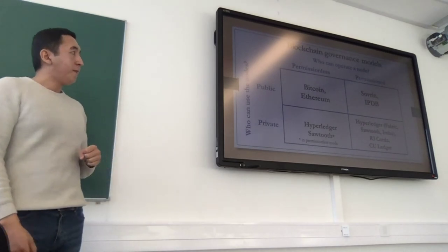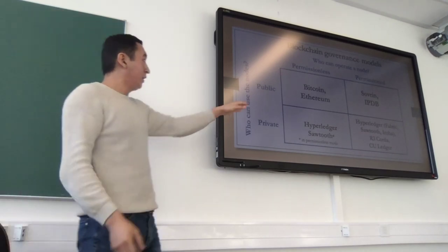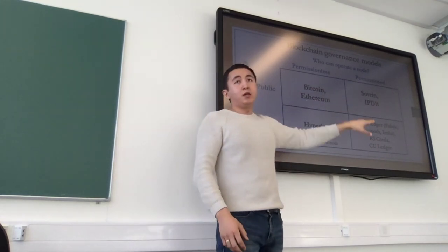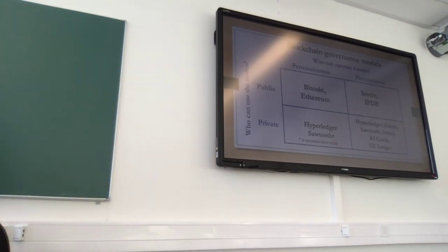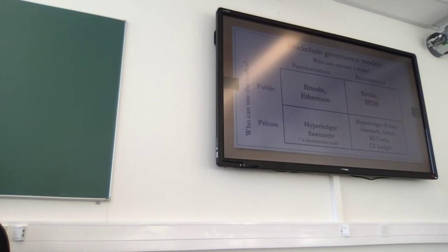In the current landscape for self-sovereign identity, everyone is choosing different blockchains, so the overall field is scattered. Everyone is trying to approach SSI and contribute, but they are choosing different methodologies. Some are choosing public blockchain, some private, and some are using distributed systems that aren't even blockchain. So the field is quite fragmented.